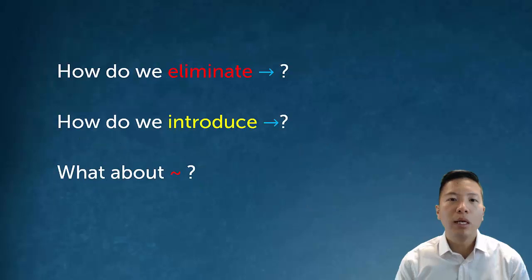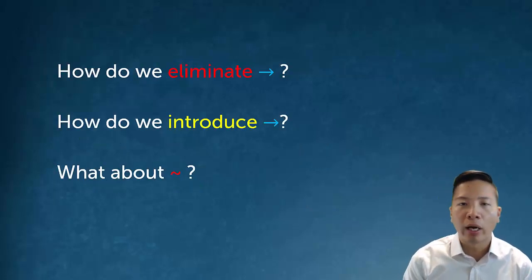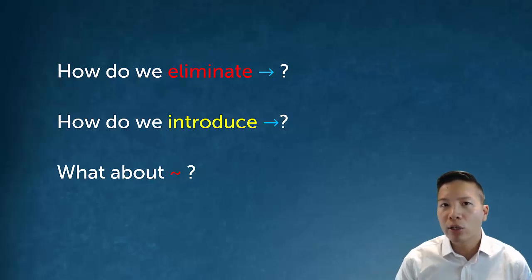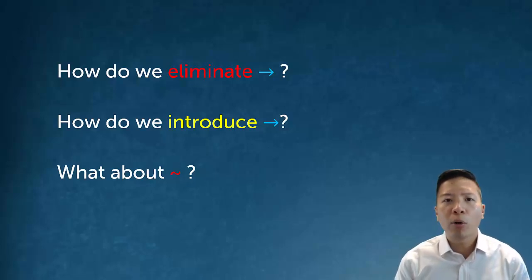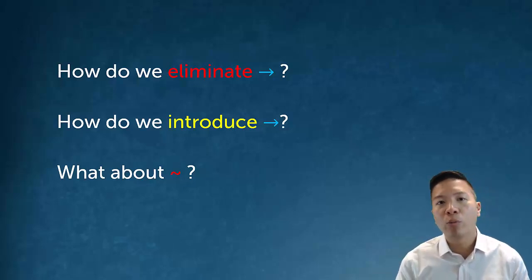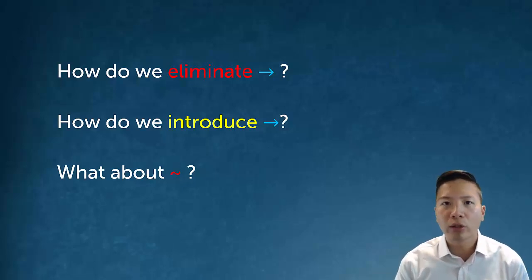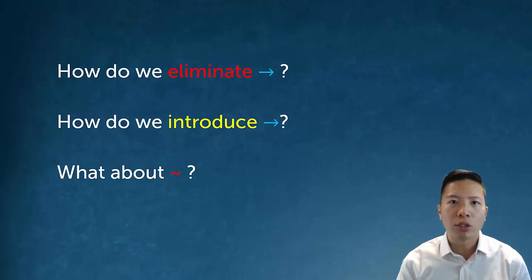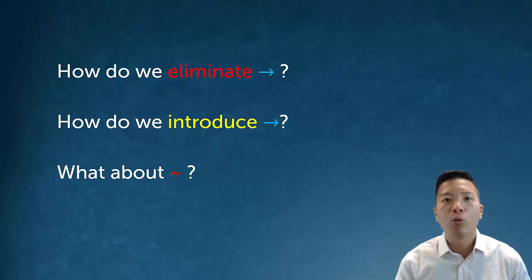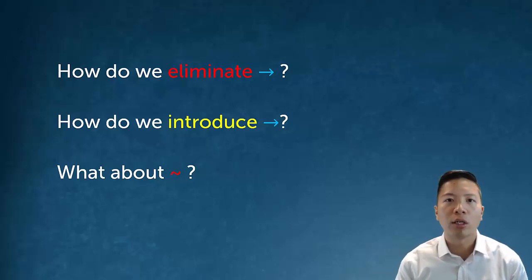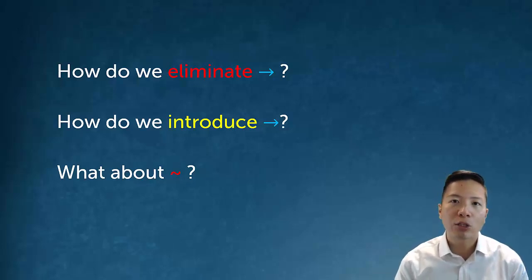Modus ponens and modus tollens are both elimination rules for the conditional — we start with the conditional and access one of its parts. To introduce a conditional, there is no separate introduction rule. Instead, when we want a conditional, we write 'show phi arrow psi' and start a conditional derivation, which allows us to introduce a conditional statement.